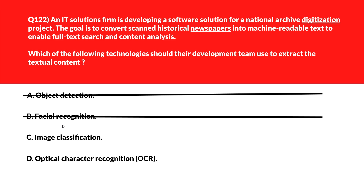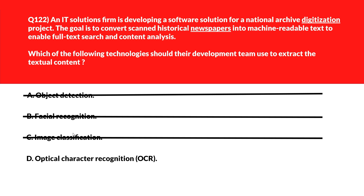Option C is Image Classification — it groups images by visual category without extracting detailed text from them, so that's the wrong answer. Option D is Optical Character Recognition, known as OCR. OCR enables converting printed newspaper text into machine-readable format for digitalization — this looks good.